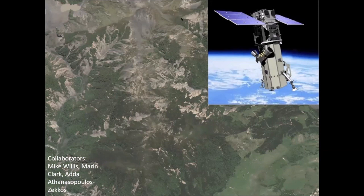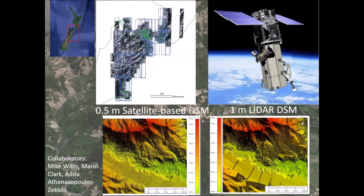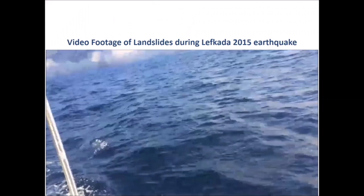We can use this imagery to map landslides not just in two dimensions, but in three dimensions. For example, in New Zealand, using stereo satellite imagery, our team was able to create a half-meter digital elevation model of the entire north part of the South Island before and after the 2016 Kaikoura earthquake. This is an area of 65,000 square kilometers, equivalent to the entire state of South Carolina. Using this data, we are able to get quantitative assessments of the numerous landslides that occurred during that event.